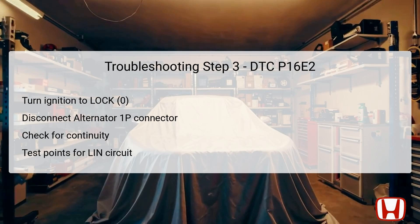For this troubleshooting step, turn the ignition switch to the lock position (0) to ensure all systems are powered down. Once secured, disconnect the alternator 1P connector to isolate the LIN circuit from potential outside influences. With the connector removed, check for continuity between test points 1 and 2 within the LIN circuit to evaluate whether the wiring is intact. The test point involves measuring from the alternator 1P connector, pin 1 (tan), to body ground. A break in continuity indicates issues along the LIN circuit, necessitating further diagnosis if no continuity is detected.